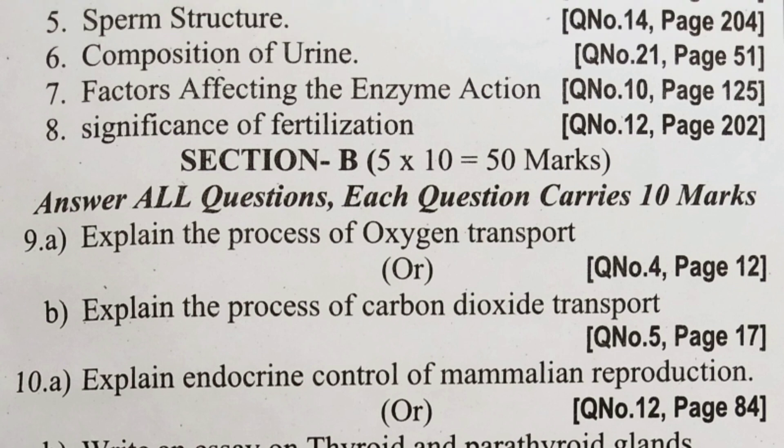Model Paper 3 short questions: fifth — sperm structure; sixth — composition of urine; seventh — factors affecting enzyme action; eighth — significance of fertilization.